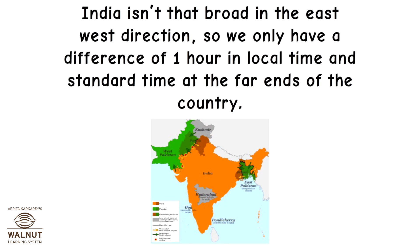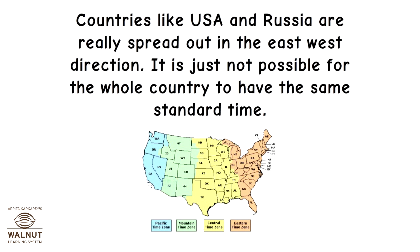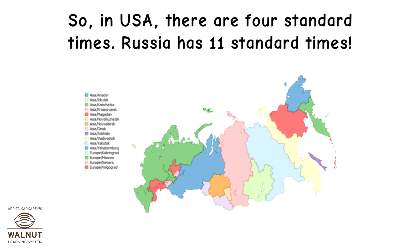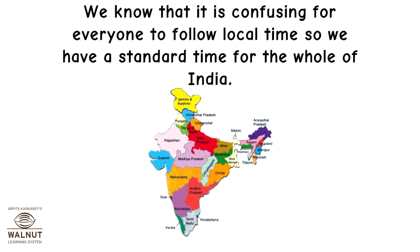India isn't that broad in the east-west direction, so we only have a difference of 1 hour in local time and standard time at the far ends of the country. Countries like USA and Russia are really spread out in the east-west direction, so it is just not possible for the whole country to have the same standard time. We know that it is confusing for everyone to follow local time, so we have a standard time for the whole of India.